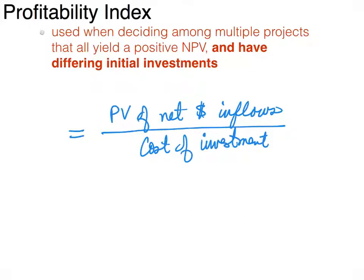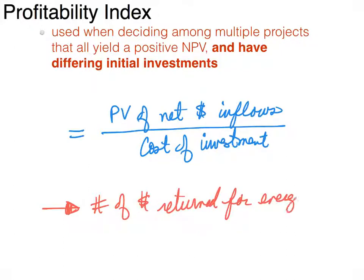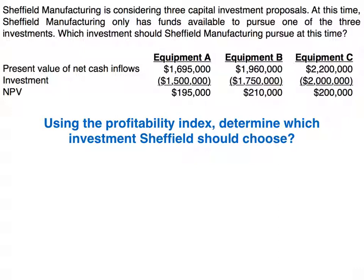The profitability index gives you the number of dollars returned for every dollar invested. For every one dollar invested, how many dollars does it return — a dollar fifty, a dollar fifty-two? Sheffield Manufacturing is considering three capital investment proposals, but only has funds to pursue one. Which investment should Sheffield Manufacturing pursue?